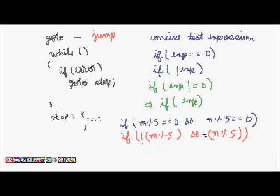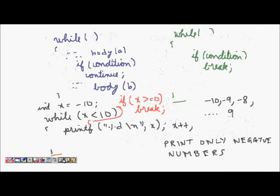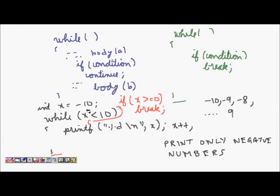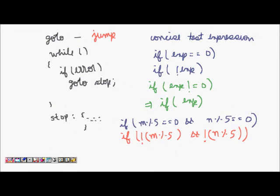This ends our lecture. We learned about jumps in the loop: how to print even numbers using continue, which is for leaving some part of the loop body. Then we saw break, which exits the loop itself. Then we saw the goto statement, which transfers execution to a label. Thanks for listening — please subscribe to Sora School of Computing.